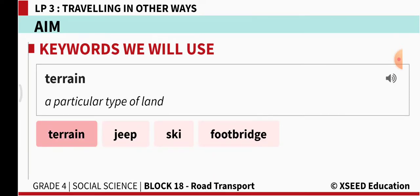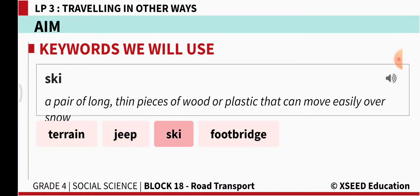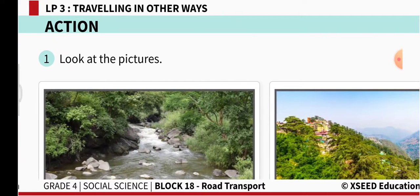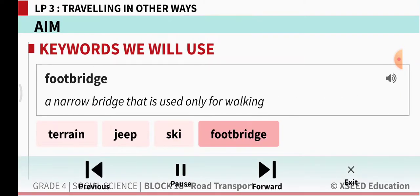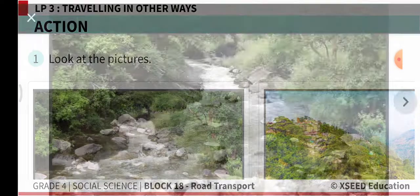The keywords we are going to learn are: 'terrain' — a particular type of land; 'jeep' — a type of vehicle that can be used in rough terrain where there is no road, or in a jungle or forest; 'ski' — a pair of long thin pieces of wood or plastic that can move easily over snow; and 'footbridge' — a narrow bridge that is used only for walking.